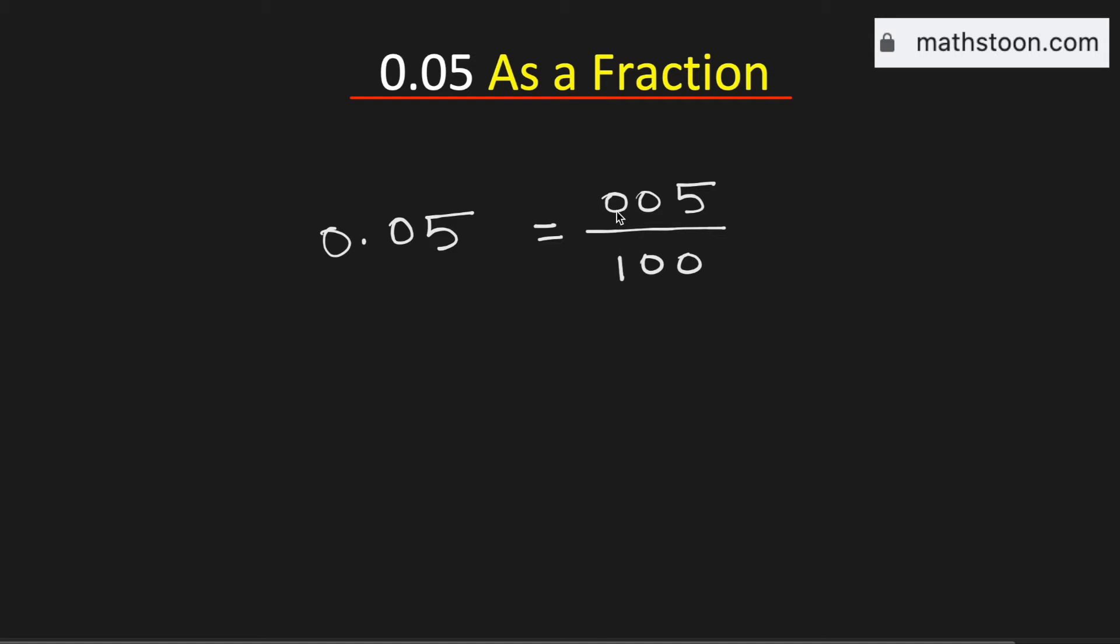As there is no meaning for the zeros on the left, this is equal to 5 over 100. Now we will simplify it.